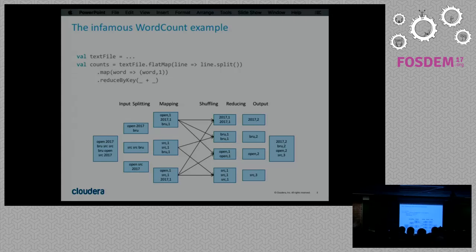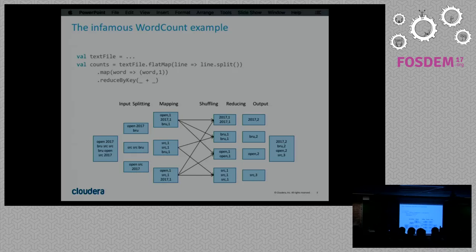So, the infamous word count example — word count is the hello world of big data. It gives you the first impression and has certain merits. The map-reduce paradigm demonstrates that even though you have a huge chunk of data and will never have a global view of it on any single machine because it doesn't fit, you can still produce a global count for a given key. But it doesn't give you much more. People sometimes use this for benchmarking a big data application.